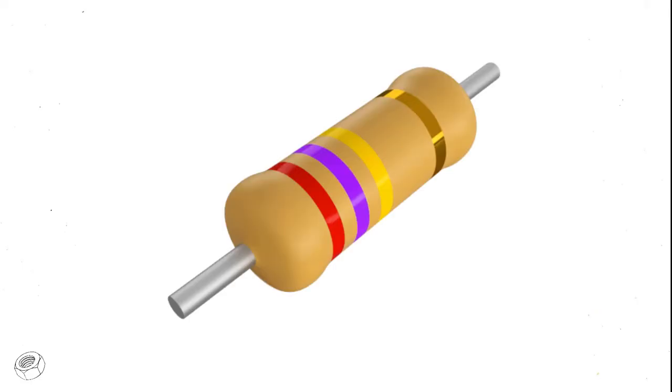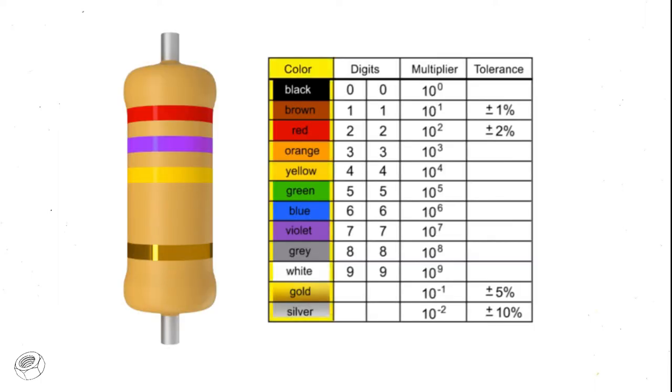Resistors are color-coded with markings or bands that allow you to quickly identify resistance values and tolerance. Using a color chart table will allow you to determine the value of any common 4-band resistor. Memorizing this color chart will enable you to become proficient at quickly decoding and using resistors.